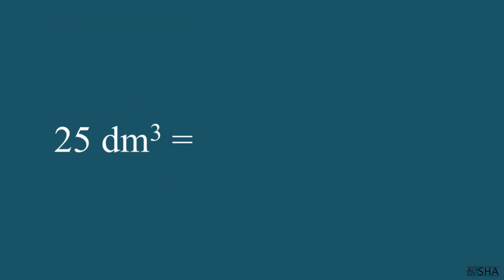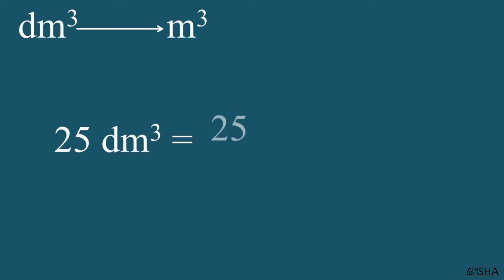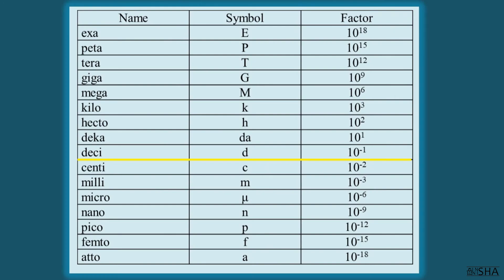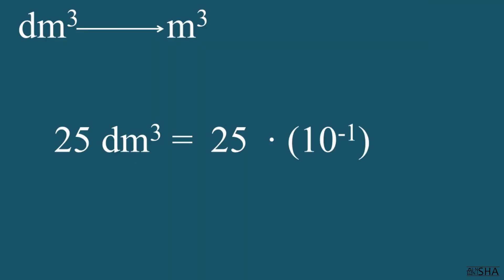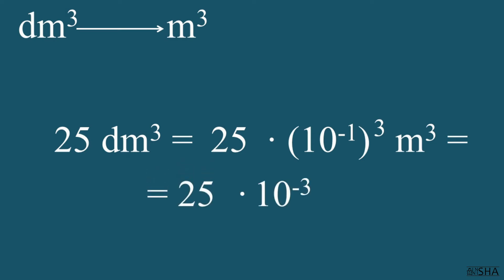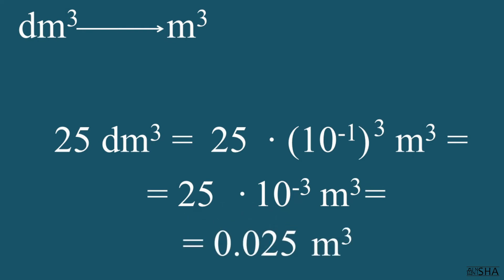Let's convert 25 cubic decimeters to cubic meters. This will be 25 times the factor of the prefix deci, 10 to the negative 1st power, which we will also raise to the third power. We get 25 times 10 to the negative 3rd power cubic meters. This can also be written as 0.025 cubic meters.